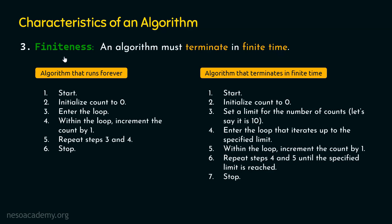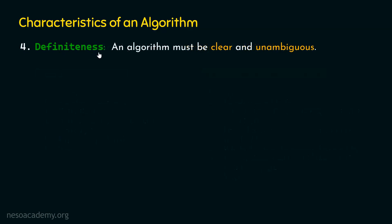Let's understand characteristic number four, which is definiteness. An algorithm must be clear and unambiguous — it must not have any ambiguity. Each and every instruction or step of an algorithm must be clear and precise, giving only one meaning. There must not be multiple meanings for the steps we are writing. An algorithm must be clear in its meaning and must not have any ambiguity.